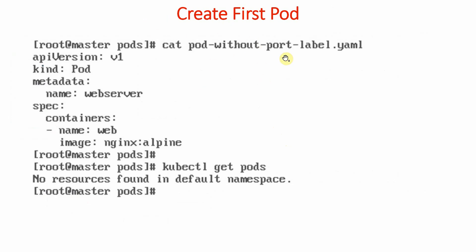Now we are going to create our first pod. There are two ways to create pods: the recommended method is to create a YAML file for creating any objects. In our case we will be using a certain filename according to the options — like we have created one file 'pod-without-port-label', meaning we are creating one pod in which we are not specifying any port and neither any label. In your case you can name it anything. This file is one way of creating a pod; the second way is the command line. We will be going through both methods.